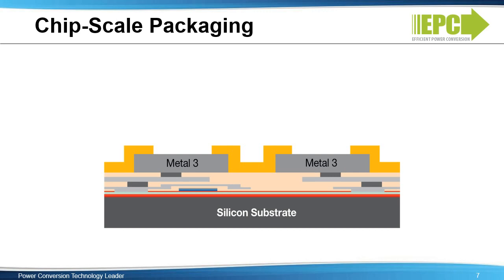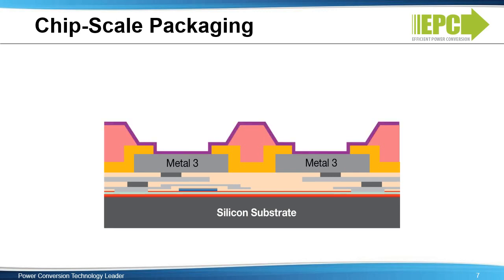The process steps are as follows. It starts with finished wafers with openings in the passivation, where Metal 3 is partially exposed. Next, photopolyimide is deposited and removed in the area where the solder is desired. Then an underbump metal is deposited to create an interface between the aluminum top metal and the solder bolt material.